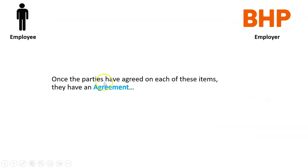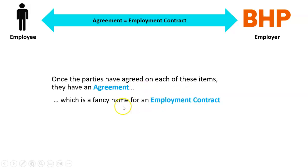Once the parties have agreed on each of these terms and items, they will have an agreement. For the rest of this chapter, when we say 'agreement' we mean it's really just a fancy name for an employment contract. What we need to learn now is the different types of agreements, or employment contracts, and we'll do that in the next video.